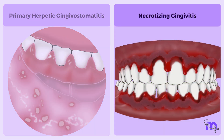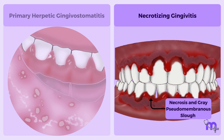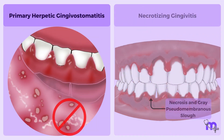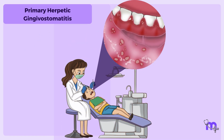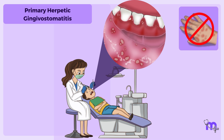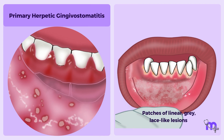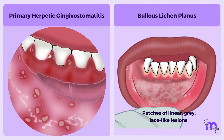Necrotizing gingivitis is characterized by necrosis and pseudomembrane formation, which were absent in my case. In erythema multiforme, vesicles rupture to form a pseudomembrane but not an ulcer as in Ajo's case, and skin lesions were also absent, which are common in erythema multiforme. Patches of linear grey lace-like lesions, characteristic of bullous lichen planus, were also absent in Ajo.